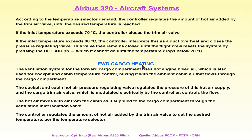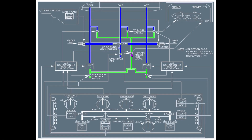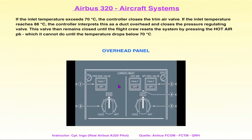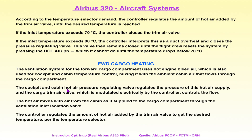Für das Forward Cargo: Die heiße Triebwerkszapfluft – Hot Engine Bleed – wird auch für Cockpit- und Kabinentemperaturregelung verwendet und mit der Kabinenumgebungsluft gemischt. Das Cockpit and Cabin Hot Air Pressure Regulation Valve reguliert den Druck dieser Heißluftzufuhr. Für den vorderen Gepäckraum gibt es kein extra Hot Air Pushbutton, weil dieses Ventil für die Air Condition sowieso immer vorhanden ist. Allerdings gibt es ein Cargo Trim Air Valve, damit die Temperatur dementsprechend geregelt wird.